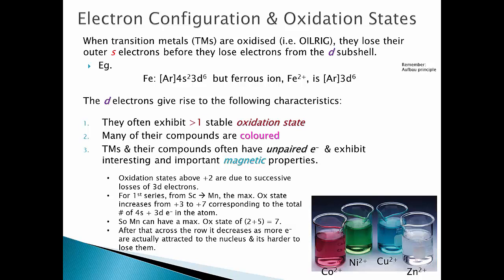The D electrons give rise to the following characteristics: transition metals often exhibit more than one stable oxidation state — for example iron 2+ or iron 3+. Many of the compounds are colored because of these D electrons. Transition metals and their compounds often have unpaired electrons and exhibit interesting and important magnetic properties, which we'll talk about later.